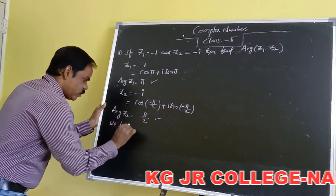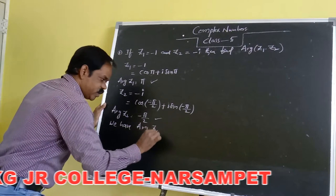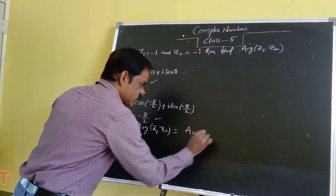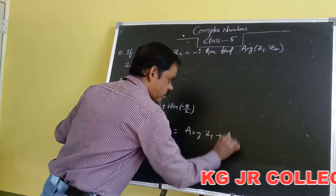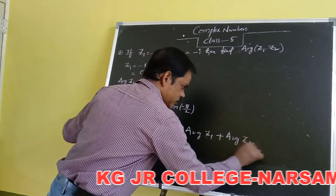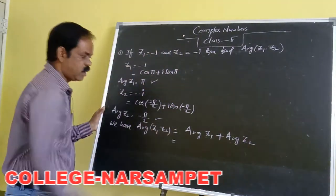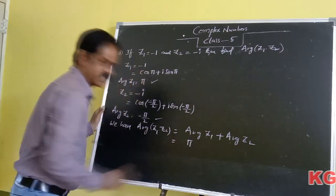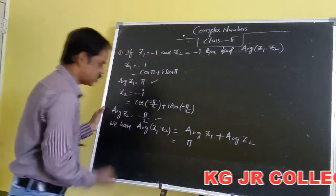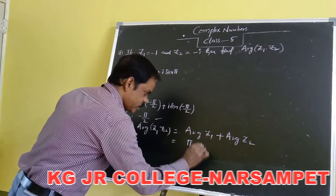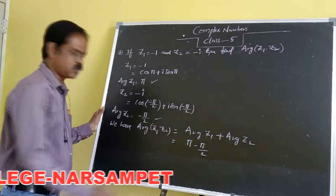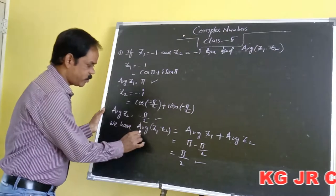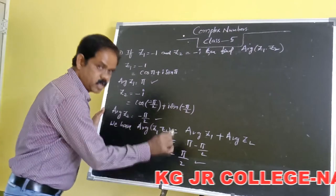According to the formula, the argument of Z1 into Z2 is equal to argument of Z1 plus argument of Z2. The argument of Z1 is equal to pi, and the argument of Z2 is equal to minus pi by 2. So pi minus pi by 2 is equal to pi by 2. Therefore the argument of Z1 into Z2 is equal to pi by 2.